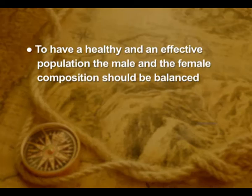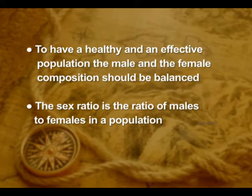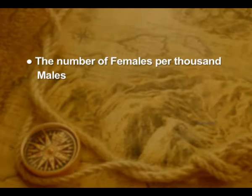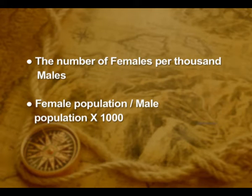To have a healthy and effective population, the male and female composition should be balanced. The sex ratio is the ratio of males to females in a population. If males outnumber females in a country, it is calculated as the number of females per 1000 males — female population divided by male population, multiplied by 1000.